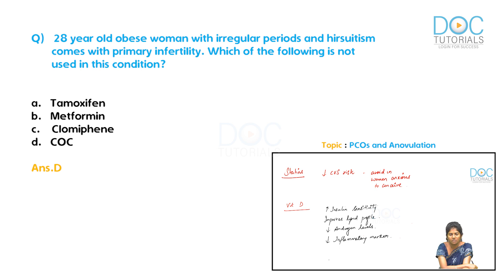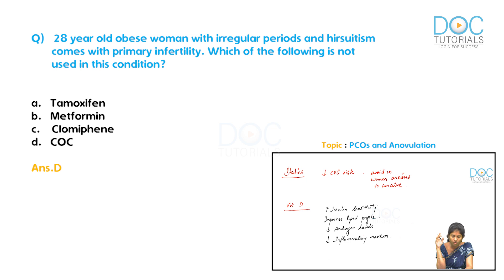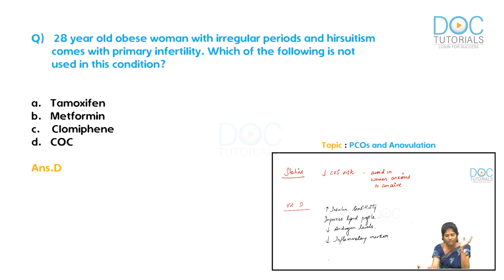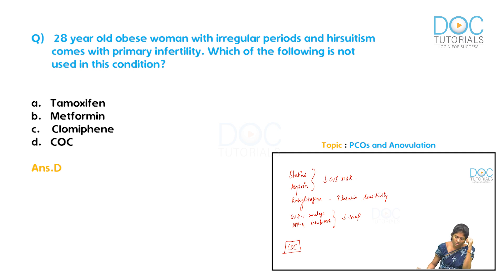Statins are useful in PCOS — they decrease cardiovascular risk and reduce the incidence of stroke or MI — but statins should not be used during pregnancy. Avoid statins for women anxious to conceive. Vitamin D is important because PCOS women are naturally deficient. Vitamin D supplementation increases insulin sensitivity, improves lipid profile, decreases androgen levels, and decreases inflammatory markers. Vitamin D can be used in women anxious to conceive.